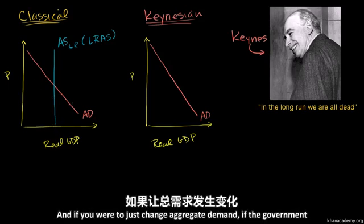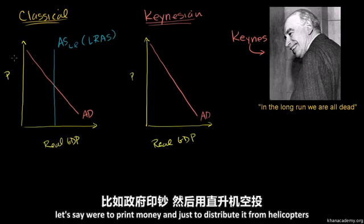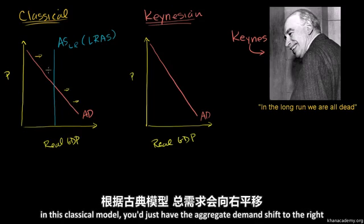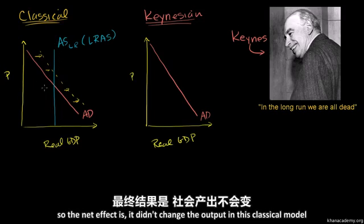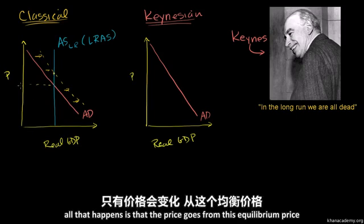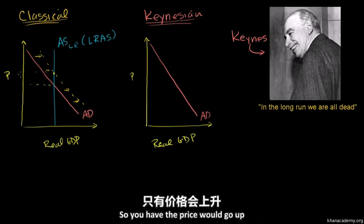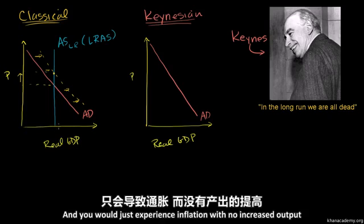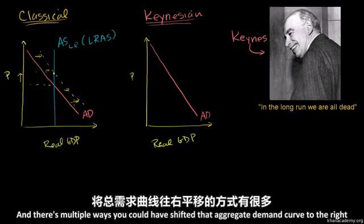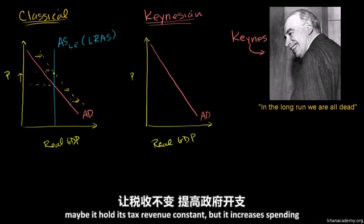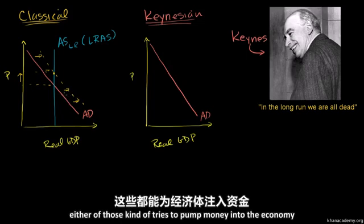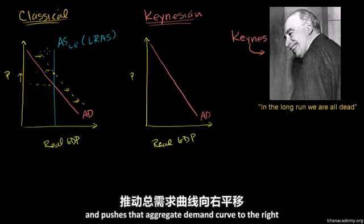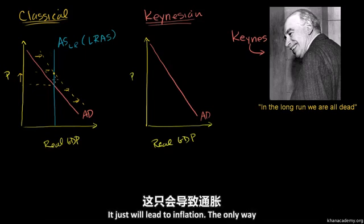If you were to change aggregate demand — if the government were to print money and distribute it from helicopters — in this classical model, aggregate demand would shift to the right, but you have this vertical long-run aggregate supply curve. So the net effect is it didn't change the output. All that happens is the price goes from this equilibrium to a new one — you experience inflation with no increased output. You could shift aggregate demand through fiscal policy: the government holds tax revenue constant but increases spending, or holds spending constant but lowers taxes — either way, it pumps money into the economy. In this purely classical view, that just leads to inflation.